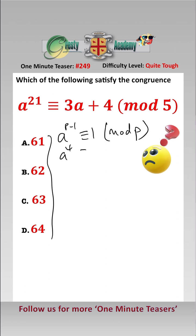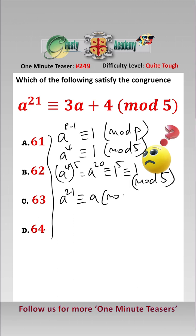In this case, a to the 4 is equal to 1 mod 5. So that means that a to the 4 to the power of 5, which is a to the 20, equals 1 to the power of 5, which equals 1 mod 5. Therefore, we have a to the power of 21 is equal to a mod 5.